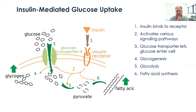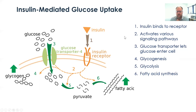Without GLUT4 transporters on cell membranes in muscle and adipocytes, glucose really can't get into the cells. But with insulin present and vesicles recruited, blood glucose levels are substantially brought down, allowing muscles and fat to bring in and store these molecules. Insulin also triggers other things inside the cell, including glycogenesis, glycolysis, and fatty acid synthesis.